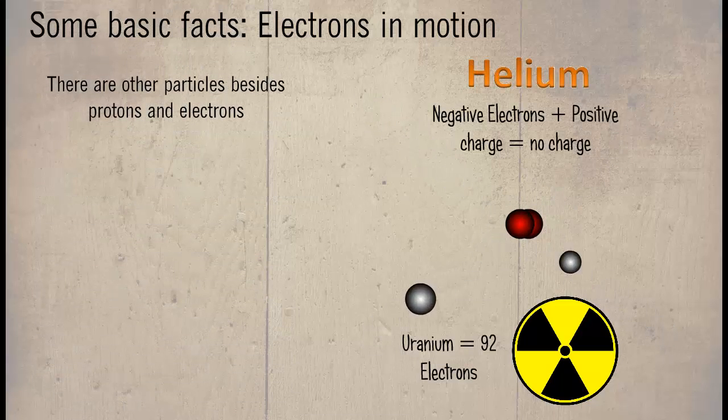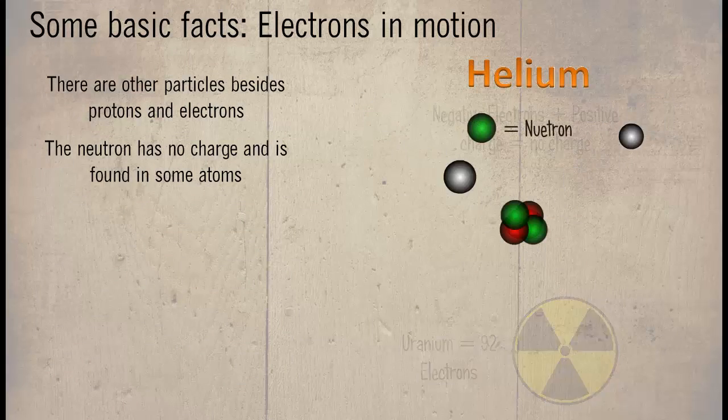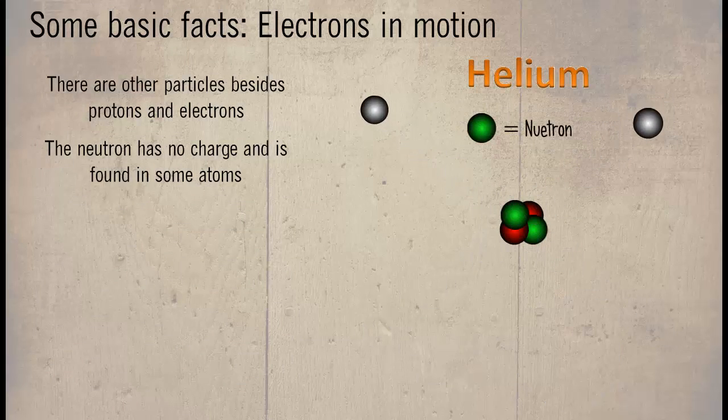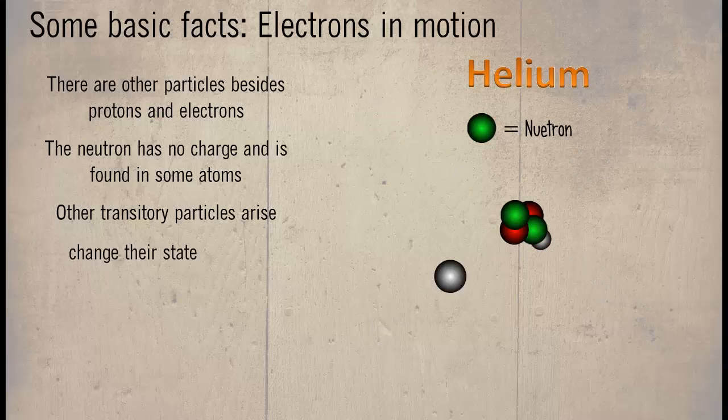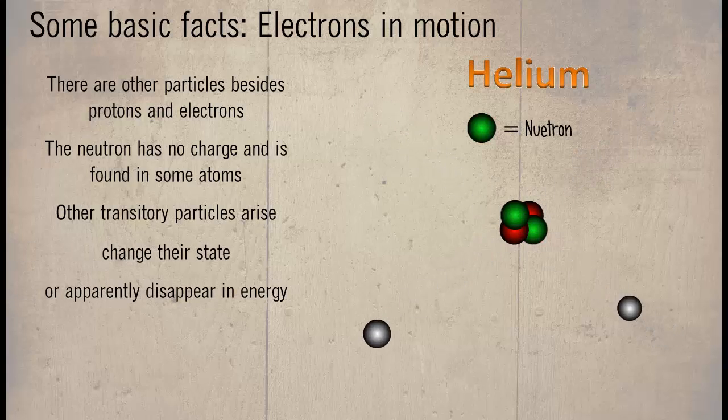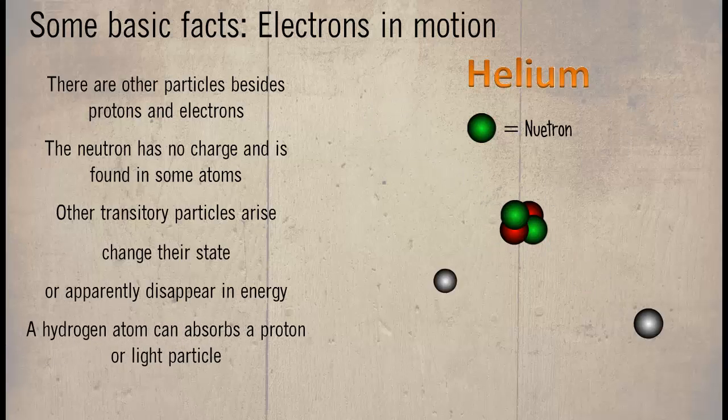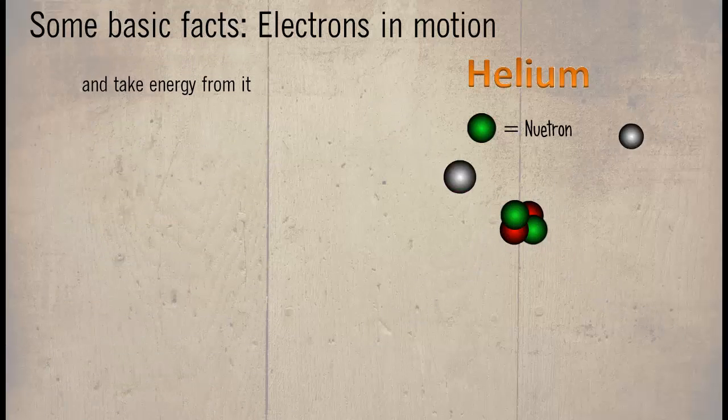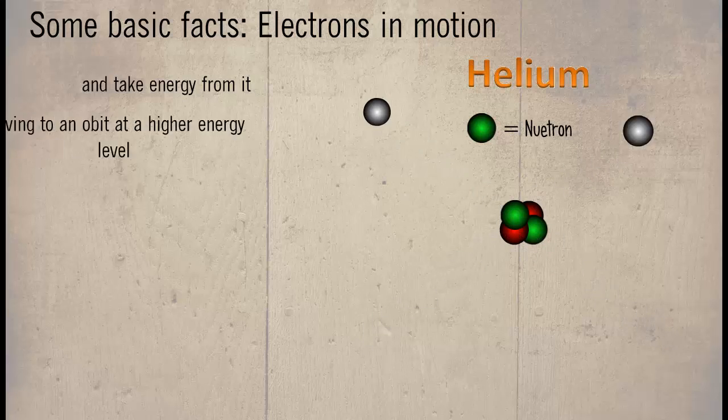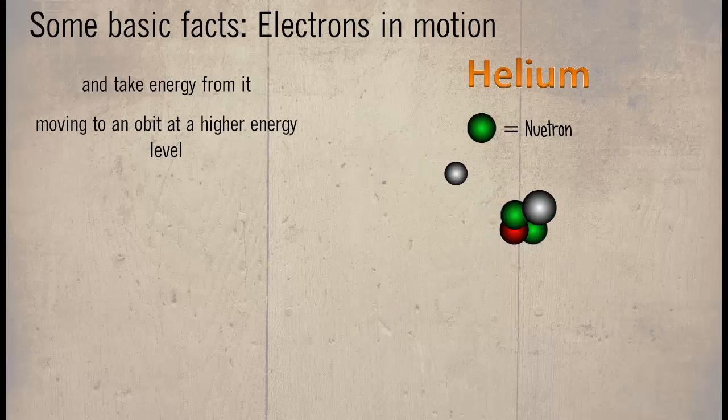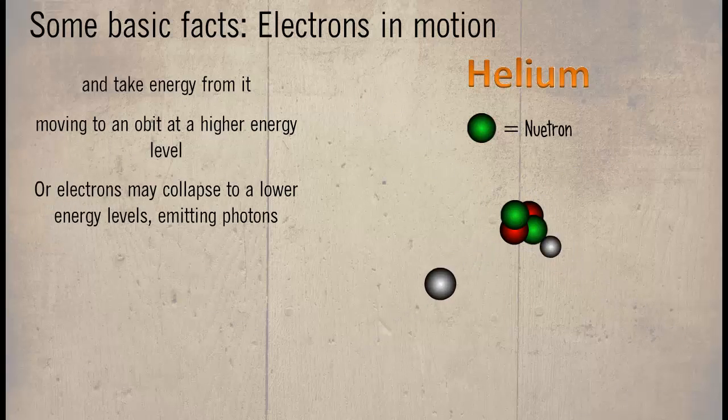There are other particles besides protons and electrons. The neutron has no charge and is found in some atoms. Other transitory particles arise, change their state, or apparently disappear in energy. A hydrogen atom can absorb a photon or light particle and take energy from it, moving to an orbit at a higher energy level, or electrons may collapse to a lower energy level, emitting photons.